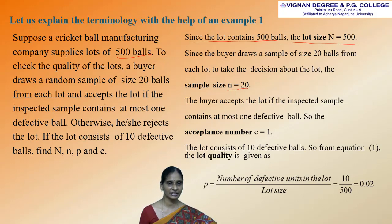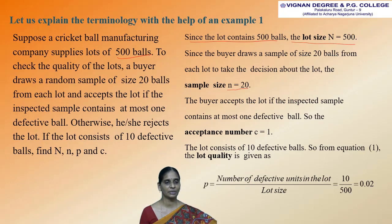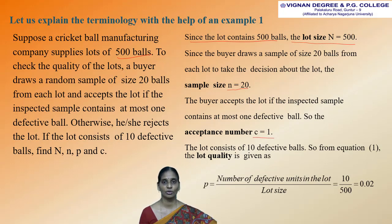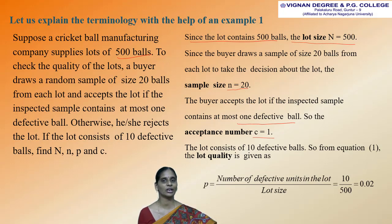The buyer accepts the lot if the inspected sample contains at most one defective ball — that is the acceptance number. The acceptance number is denoted by the letter c, and this acceptance number c is equal to 1 in this example. This means the buyer accepts the lot if the inspected sample contains at most one defective ball, so c is equal to 1.